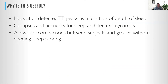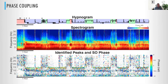This is useful because we can look at all the detected peaks as a function of a continuous metric of sleep, which collapses away the sleep architecture. We can compare between subjects and groups without needing sleep scoring. It's also well known that spindles tend to occur with specific phases of the slow oscillation. For every time-frequency peak, we plotted the color based off of the phase of the slow oscillation at the time that peak occurred.